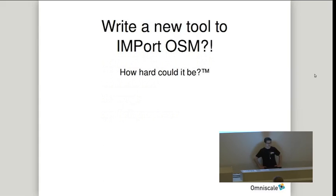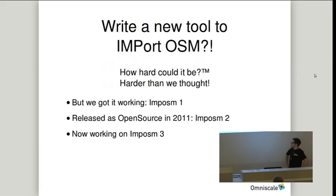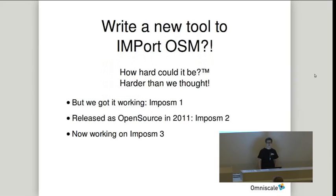So we had the idea to write our own tool to import OpenStreetMap data into a PostGIS database, and we thought: how hard could it be? Well, it was harder than we thought, but we solved it. We got a first working version, Impossum 1, which was closed source, but we released a slightly modified version in 2011 as open source — that's Impossum 2. Currently we're working on Impossum 3, and we'll talk about that in a few minutes.